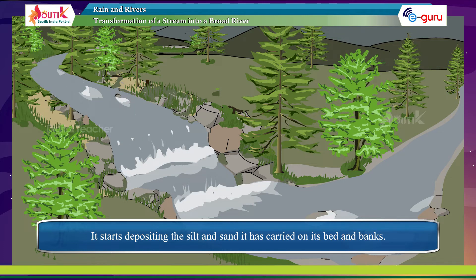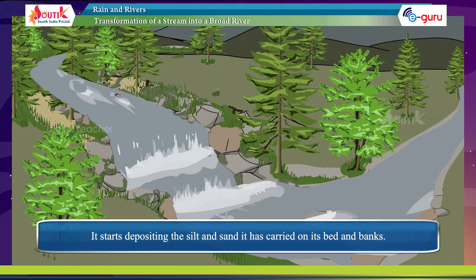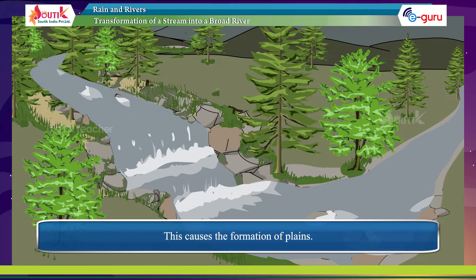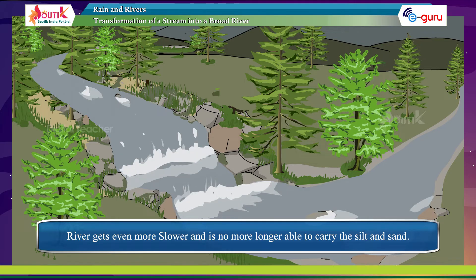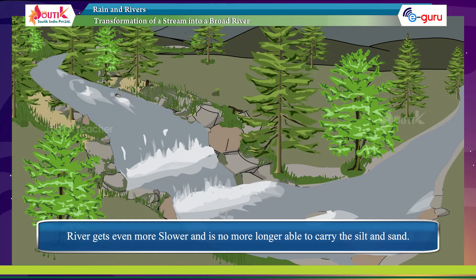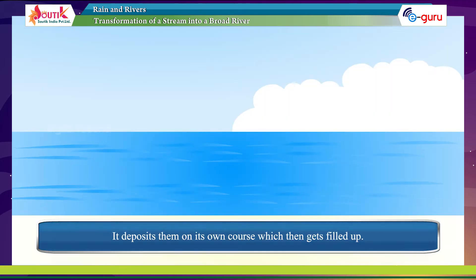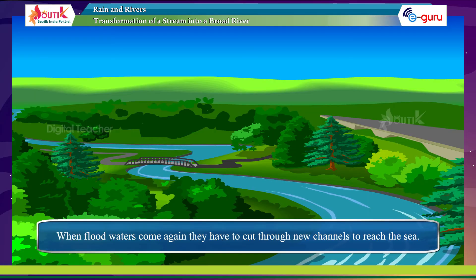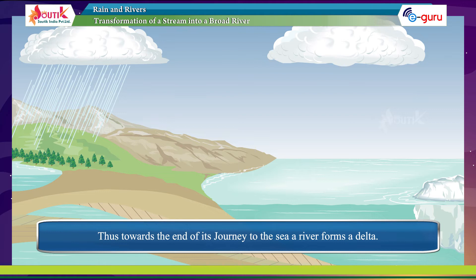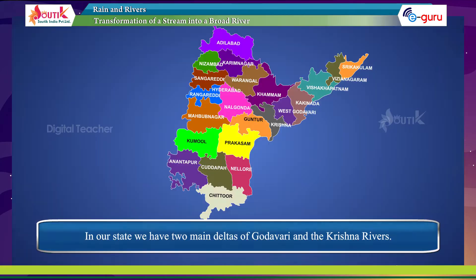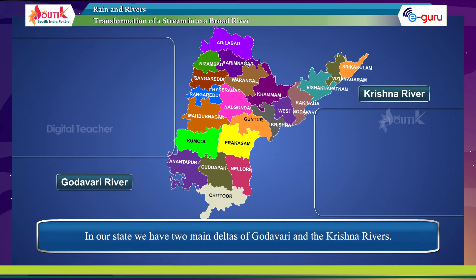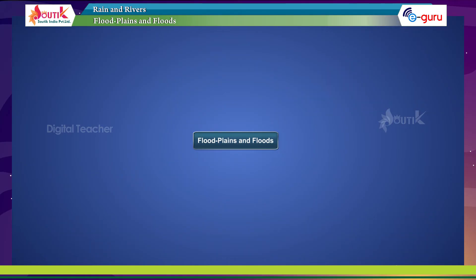As the river becomes bigger and broader, its flow gets slower. It starts depositing the silt and sand it has carried on its bed and banks, causing the formation of plains. The river gets even slower and is no longer able to carry silt and sand, depositing them along its course. When flood waters come, the river cuts new channels to reach the sea. Thus, towards the end of its journey, a river forms a delta. In our state, we have two main deltas of the Godavari and Krishna rivers.